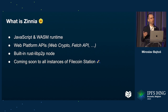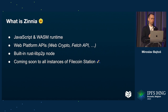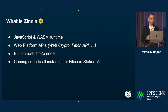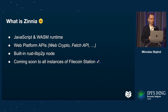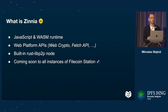We offer web platform APIs — for example, WebCrypto so you can do all cryptographic things like handshakes and encryption. We provide Fetch API for making HTTP requests to make it easy to integrate with the existing Web2 space. We are shipping a built-in Rust libp2p node so you can also talk to nodes in peer-to-peer networks. Very soon this runtime will be shipped to all instances of Filecoin Station, which people are already running on their computers — meaning if you write a module for Zinnia, you will get user adoption immediately.